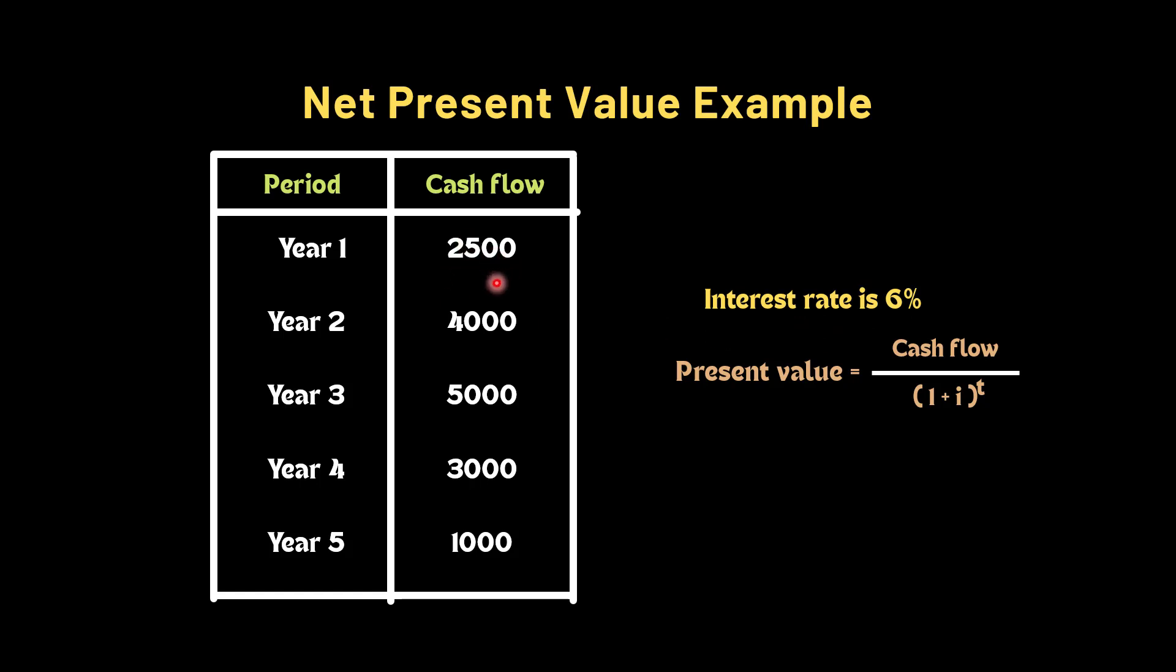Now to calculate the NPV, we need to discount these cash flows to the present period. To do this we can use the formula of present value, which is cash flow divided by 1 plus r to the power t.